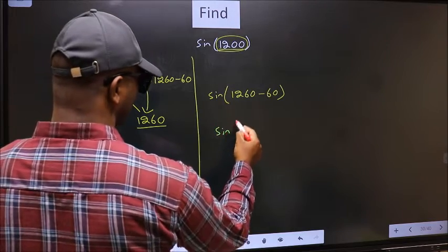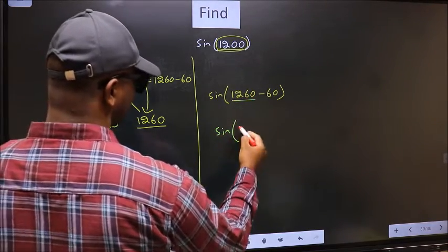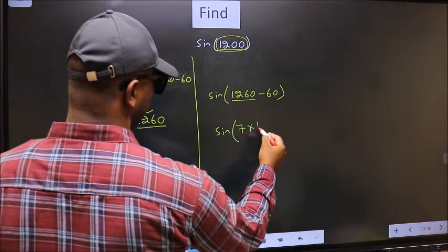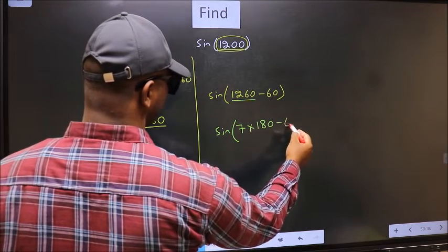Next, in place of 1260°, now we should write 7×180° minus 60°.